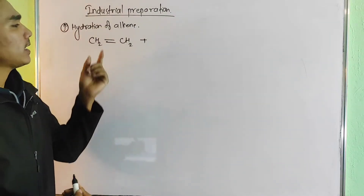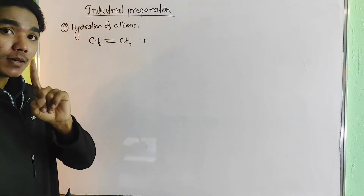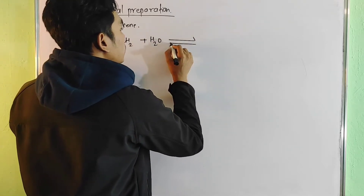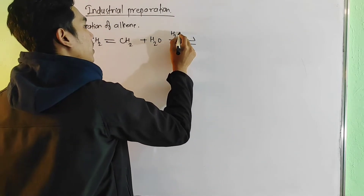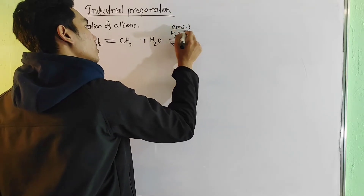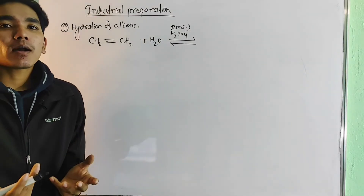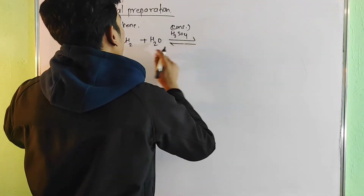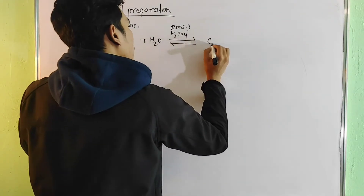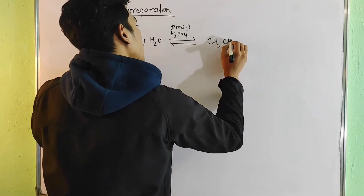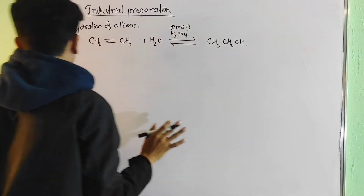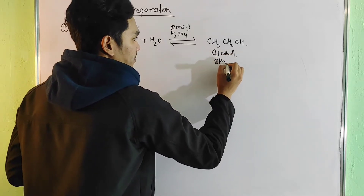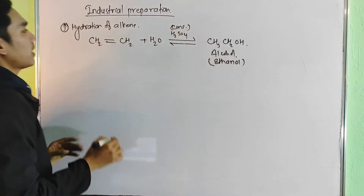This can be a symmetrical or unsymmetrical case. The reactions are reversible reactions. We use concentrated H2SO4 as a catalyst. The product is H2SO4, CH3CH2OH — that is, alcohol, specifically ethanol.